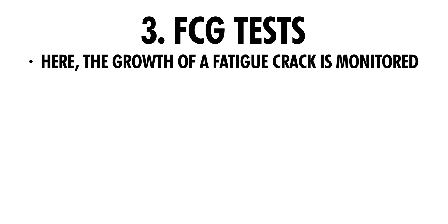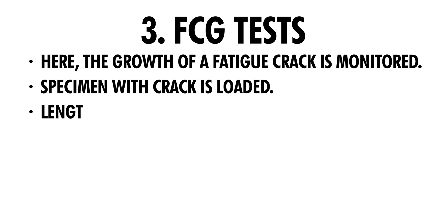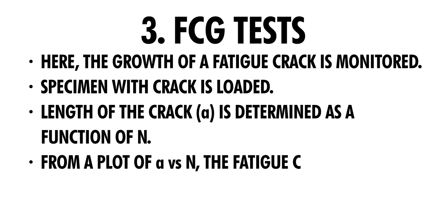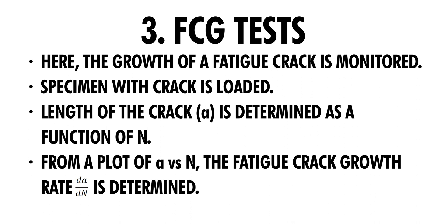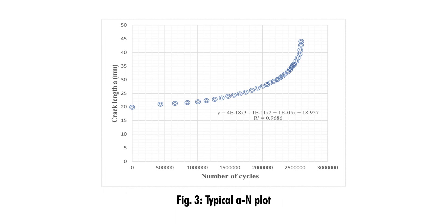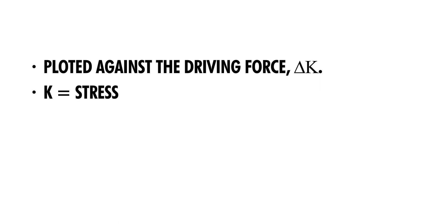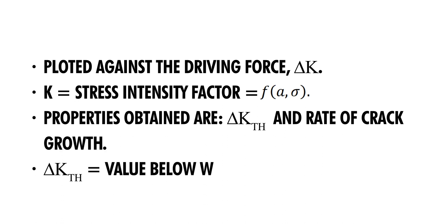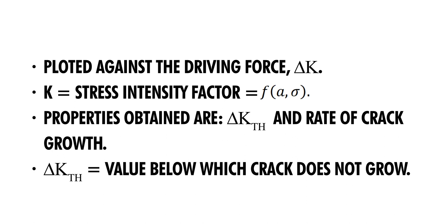Finally, in the fatigue crack growth test, the growth of a fatigue crack is monitored. The specimen with a crack is loaded, and the crack length A is determined as a function of the number of stress cycles N. From a plot of A versus N, the fatigue crack growth rate dA/dN is determined. This is plotted against the driving force delta K, where K is the stress intensity factor — a function of both crack length and stress. The properties obtained are delta K threshold and the rate of crack growth.